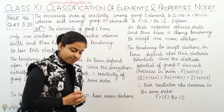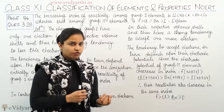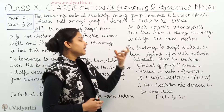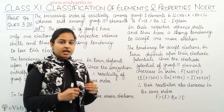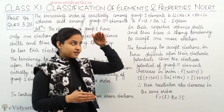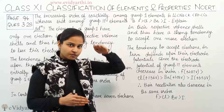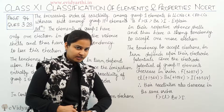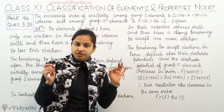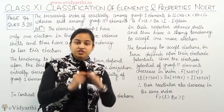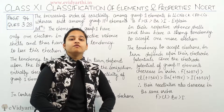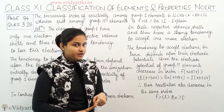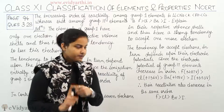The tendency to accept an electron by Group 17 elements depends upon the electrode potential. If we move down the group in Group 17, the electrode potential decreases. Since the electrode potential of Group 17 elements decreases as we move down the group, hence the reactivity also decreases in the same manner.